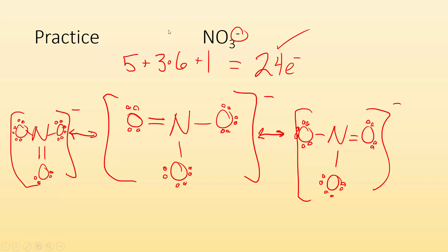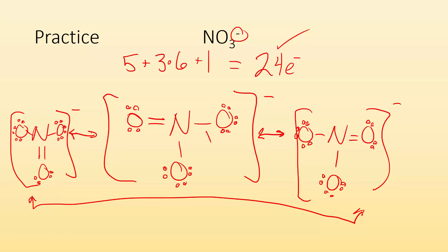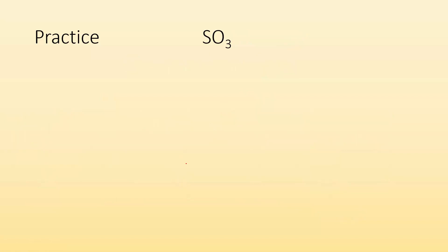So what the actual molecule is going to look like is a blend of all three structures. All of those bonds — they're not going to be single bond length or double bond length. They're going to be kind of two-parts single, one-part double bond, probably closer to the single bond length but still a mixture of those three.